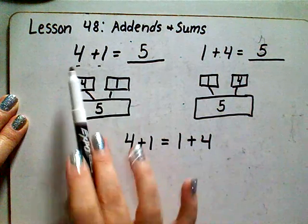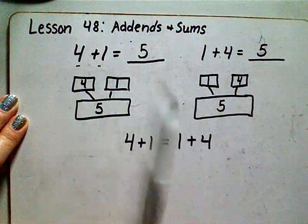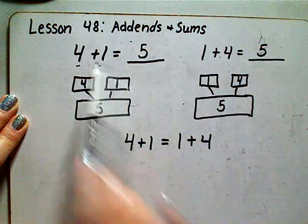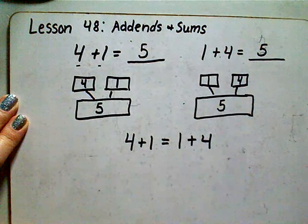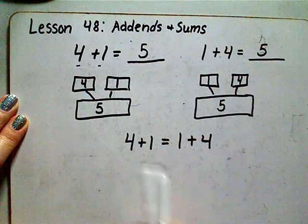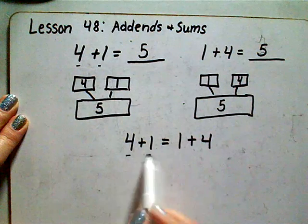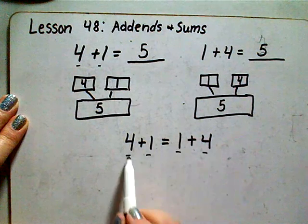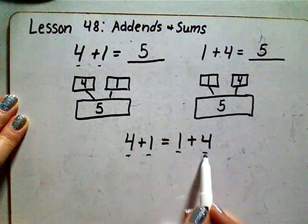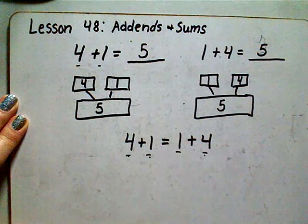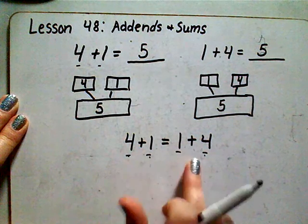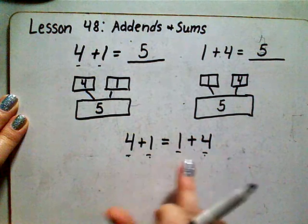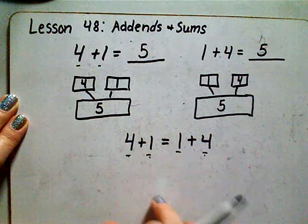When we talk about our switcheroo facts, four plus one — the switcheroo fact would be one plus four. Anytime you have the same two add-ins, the sum is always the same, or we can say those are equal to the same thing.